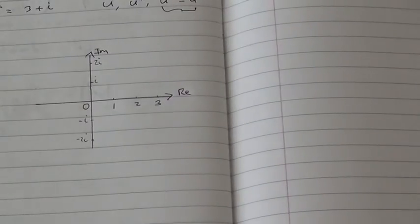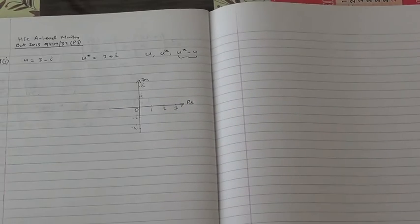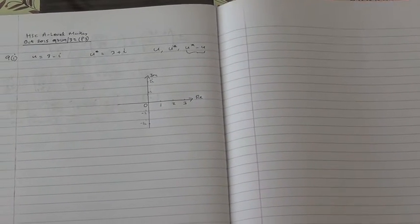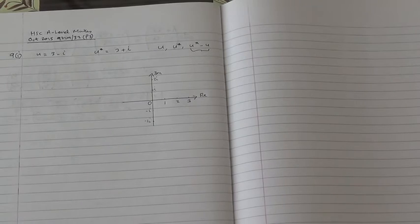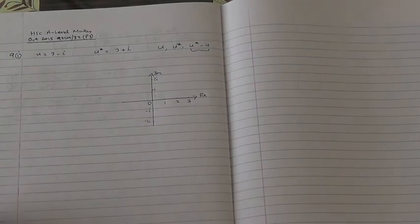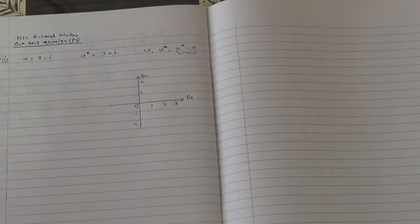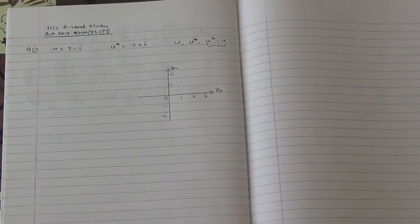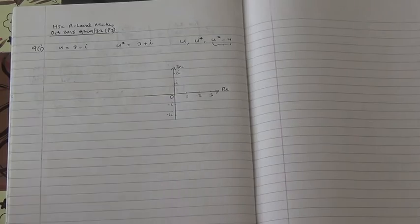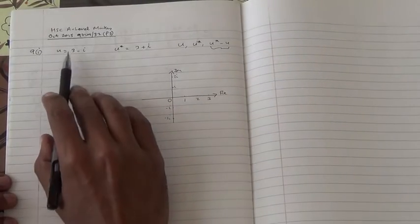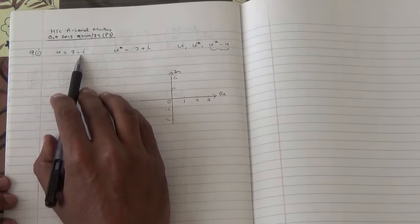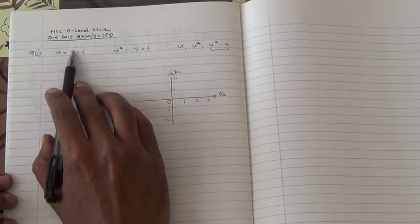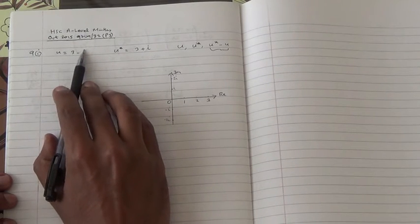Okay, so let's do this. Right away. So we have information here, and u is equal to three minus i. So this is the real part, and that's the imaginary part.